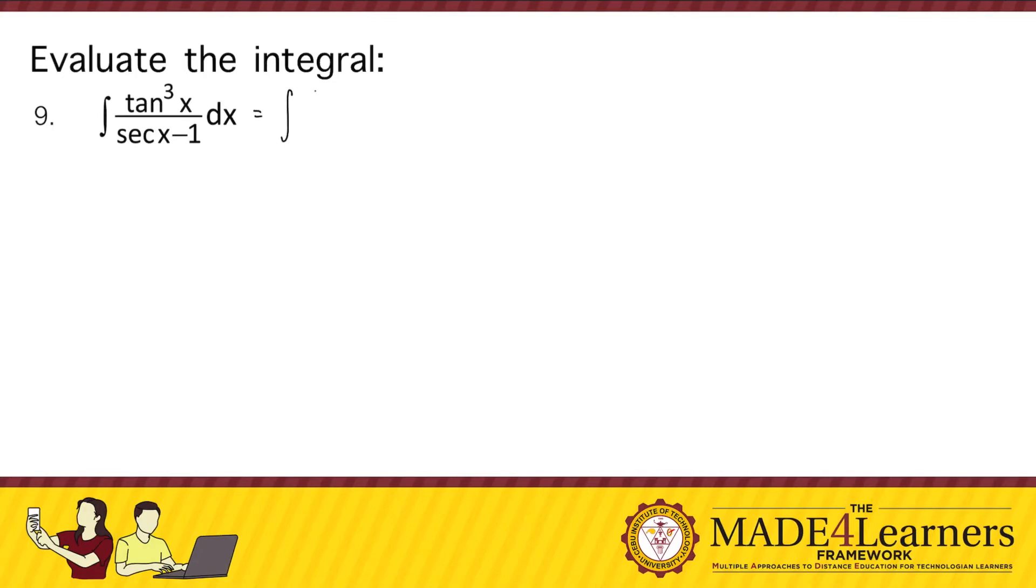So we have tangent cubed x in the numerator. We can factor that out as tangent squared x times tangent x over secant of x minus 1 dx. Now why are we factoring out the numerator?